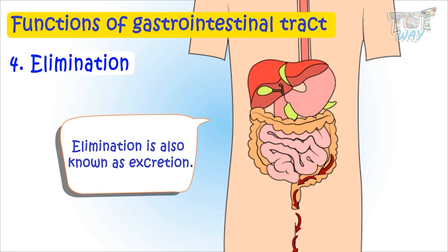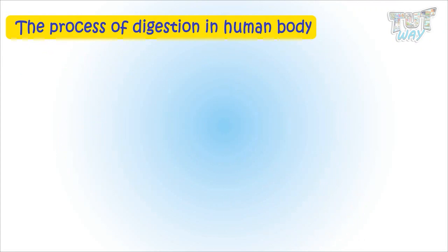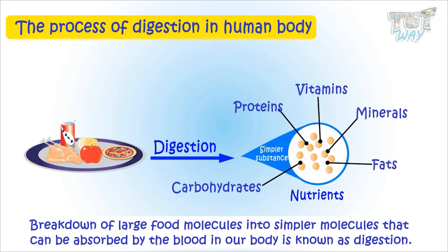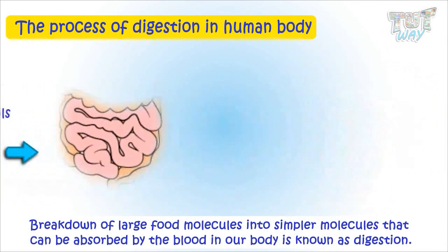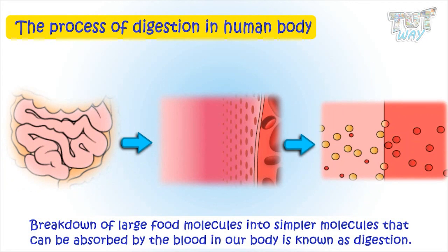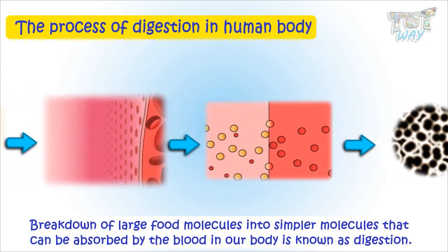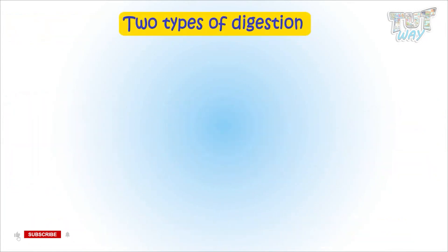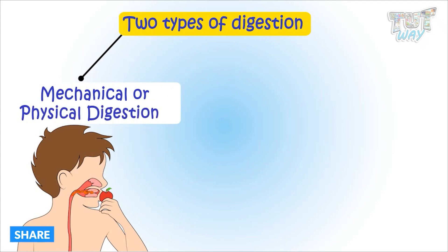So kids, we learned what are the important functions of our digestive system. Now we will learn the process of digestion in the human body. Digestion is the breakdown of larger food molecules into simpler molecules that can be absorbed by the blood and distributed to each and every cell of the body. There are two types of digestion: mechanical digestion, also called physical digestion, and chemical digestion.